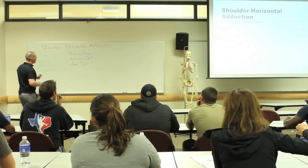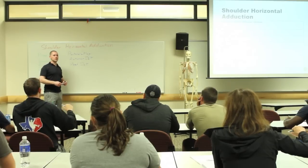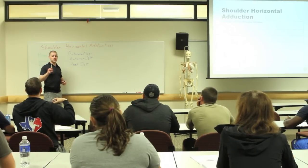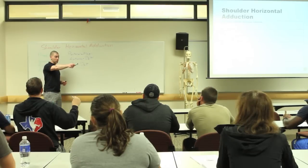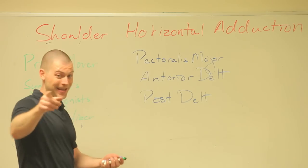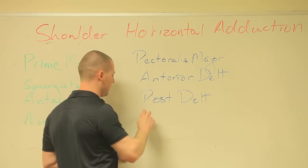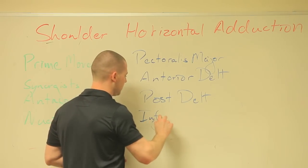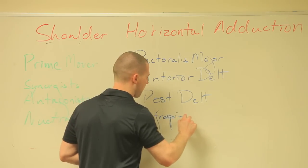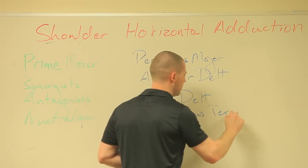Your rotator cuff — which ones specifically? The external rotators. So they externally rotate. Very nice. That would be infraspinatus and teres minor.